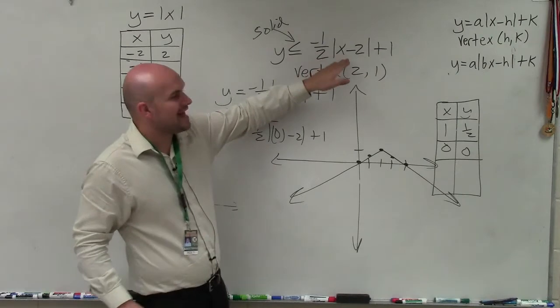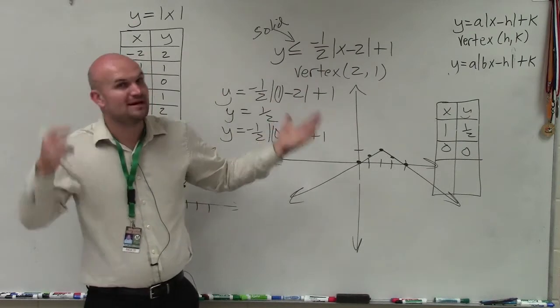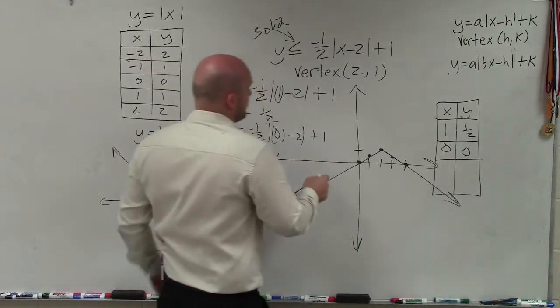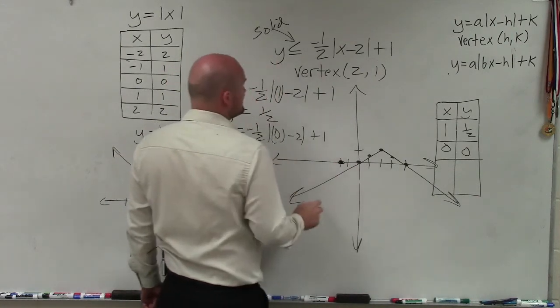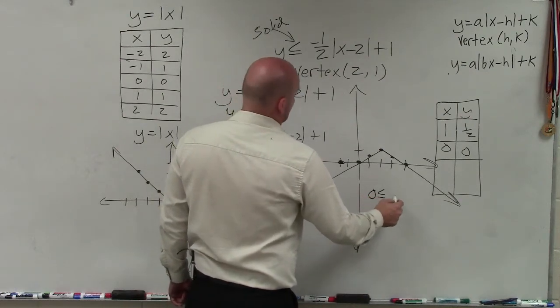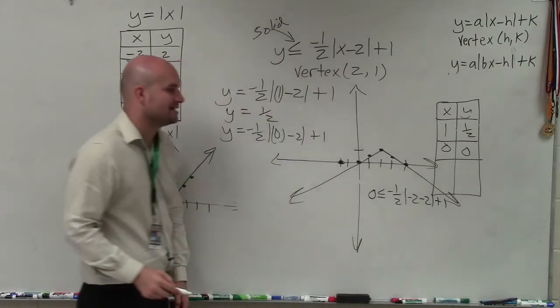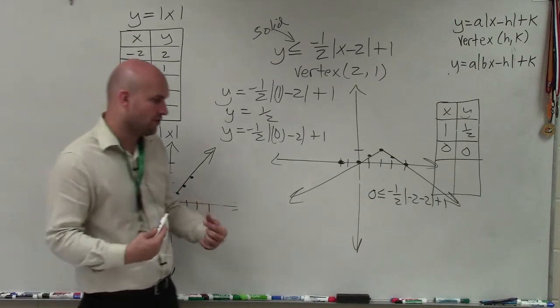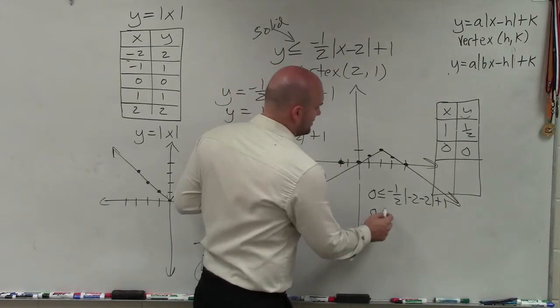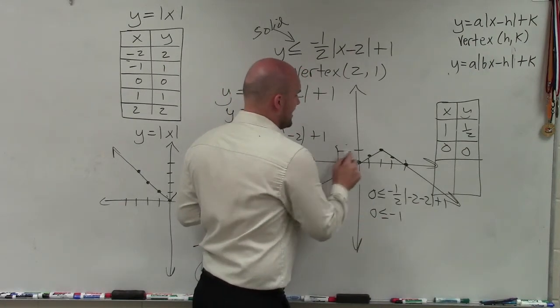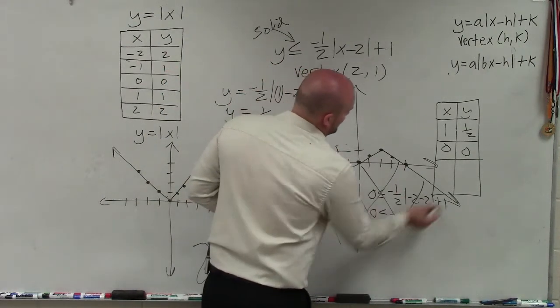I want to choose an x value that when I subtract it by 2 and take the absolute value of it, I'm going to get something that I can easily multiply by negative 1/2. So I'm going to choose the point (-2,0). That means to test (-2,0), I'm going to put 0 in for y and negative 2 in for x. Negative 2 minus 2 is negative 4. Absolute value of negative 4 is 4. 4 times negative 1/2 is negative 2. Negative 2 plus 1 is negative 1. So 0 is less than or equal to negative 1. Well, that is obviously false. So if it's false for this equation, that means all of the points inside are now true.